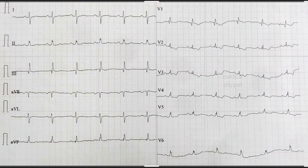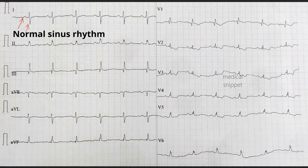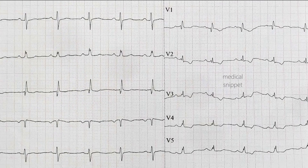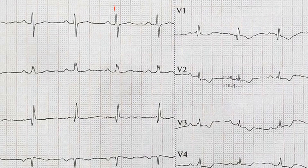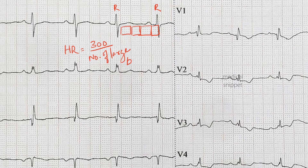This is the first ECG. Carefully look at it. The rhythm is sinus, as each P wave is followed by a normal QRS complex. The heart rate is 75 beats per minute, as there are four large boxes in between two R waves. The heart rate is 300 divided by 4, that is 75 beats per minute.